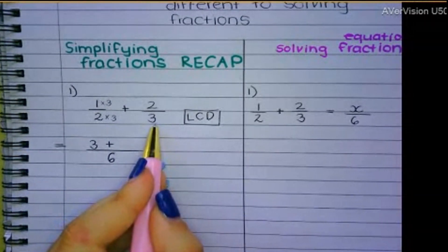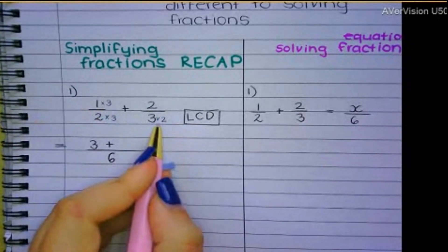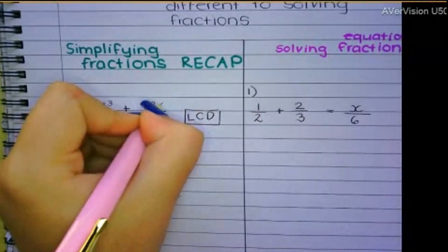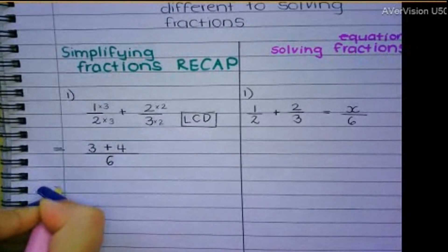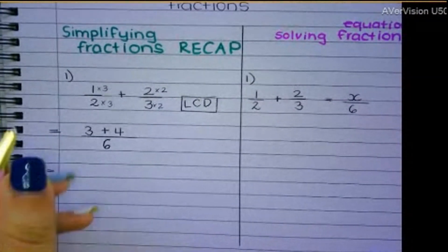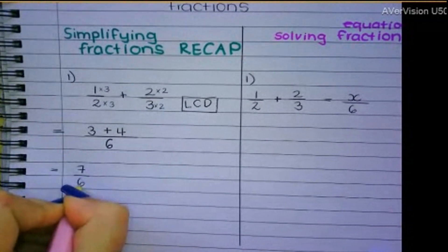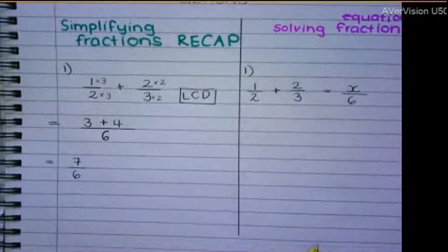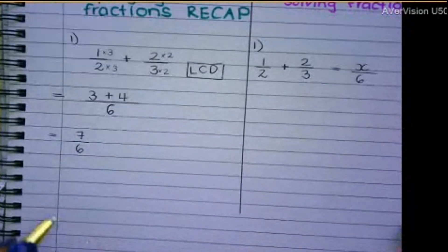Then don't forget the plus sign in between. Then let's look at the second fraction. How do I get the denominator to become 6? You times it by 2. So what I do to the bottom, I must do to the top. So you say 2 times 2. 2 times 2 is 4. So my simplified answer here, 3 plus 4 is 7 over 6. So when we simplify fractions, we find the LCD and we keep the LCD.